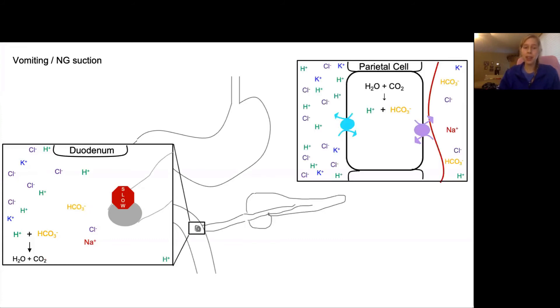But, back up at the parietal cell, the acid creation is still happening. We're still pumping that free bicarbonate into the blood. But, with that free acid being vomited out of the stomach, some of the balancing acid is lost out of the body despite the bicarbonate being sent into the blood.